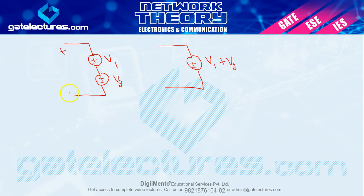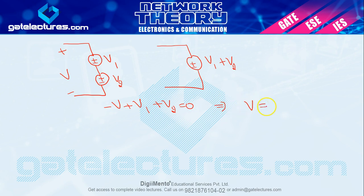Agar hum iske across KVL lagaate hain — jaise mujhe aapko bataya — clockwise move kar rahe hain. Pehla sign V ka minus aata hai. V1 ka first sign plus, aur V2 ka first sign bhi plus, equal to zero. To V kitna ho jayega? V1 plus V2. Is tarah se hum koi bhi series connection dekh sakte hain — ki voltages add honge ya subtract honge — simple KVL lagana hai. Aage jaake hum KVL padhenge.